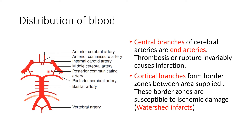The central branches of the cerebral arteries are end arteries, and their thrombosis or rupture invariably causes infarction. The cortical branches — including the anterior cerebral, middle cerebral, and posterior cerebral arteries — form border zones between areas of supply. These border zones are susceptible to ischemic damage and are also known as watershed infarcts.